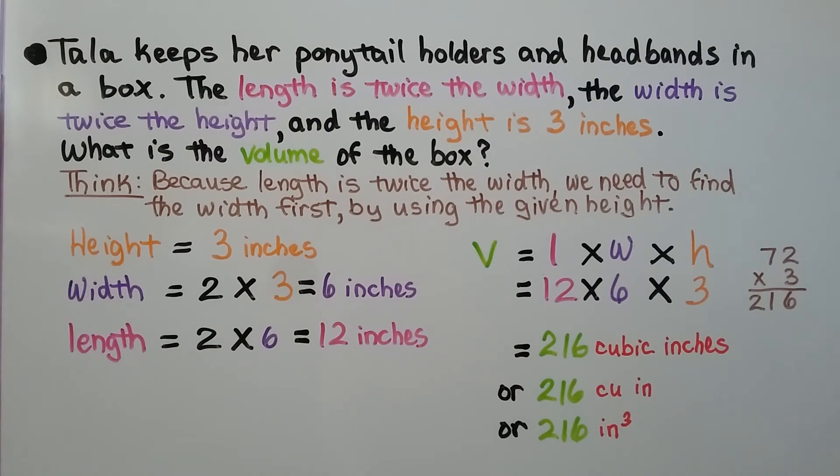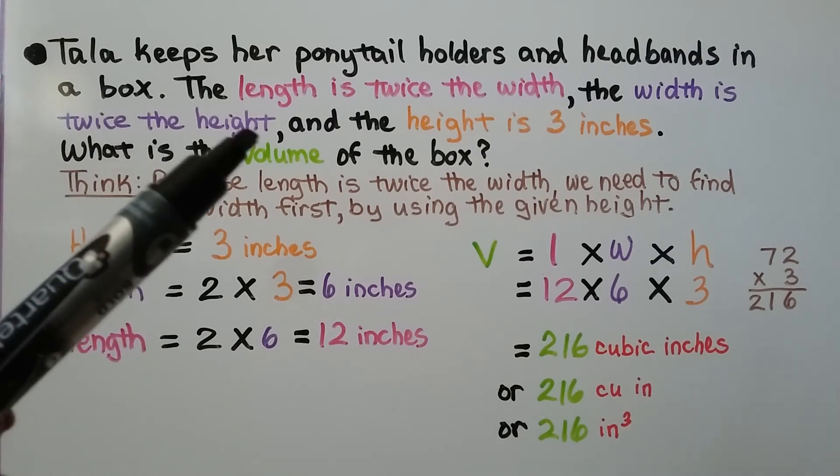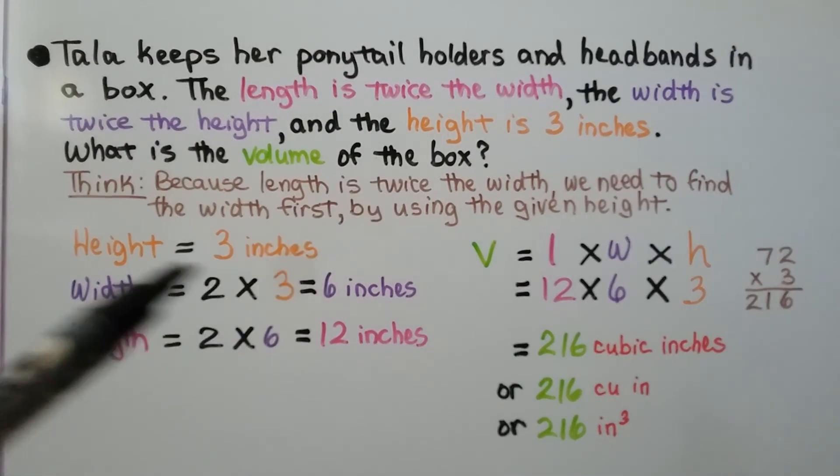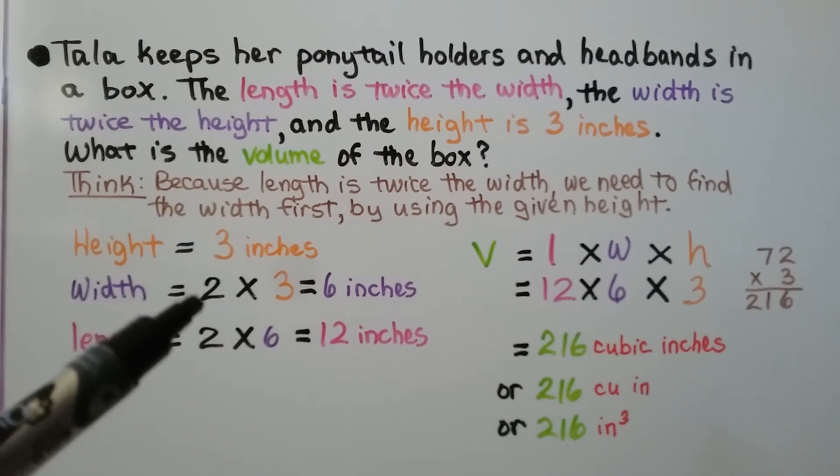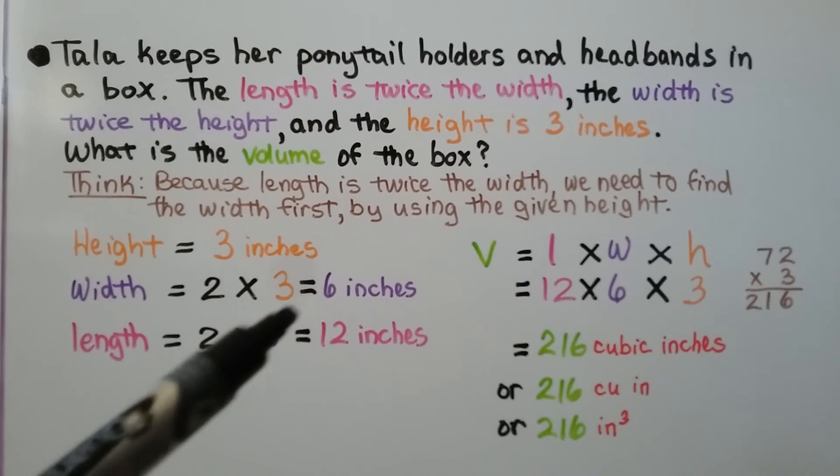Tala keeps her ponytail holders and headbands in a box. The length is twice the width. The width is twice the height. And the height is 3 inches. What is the volume of the box? We think, because the length is twice the width, we need to find the width first using the given height. So it says the width is twice the height. The height is 3 inches. So we have the height. That's 3 inches. And the width is twice the height. So it's 2 times 3. That's 6 inches.